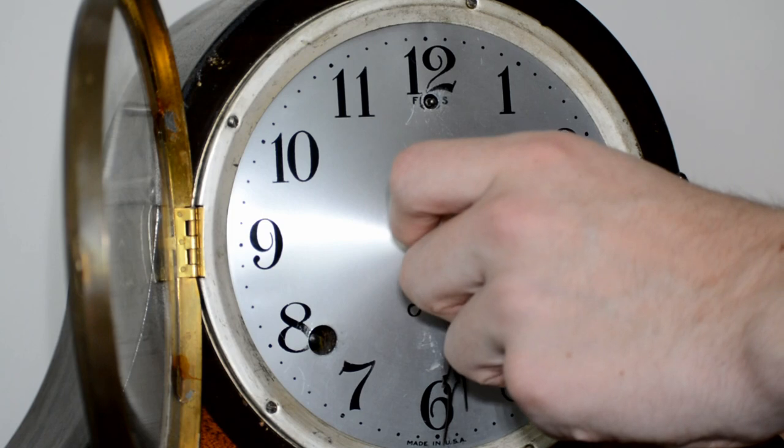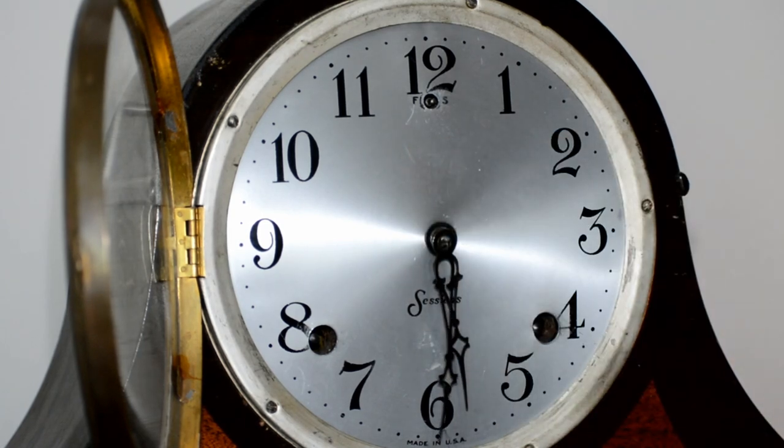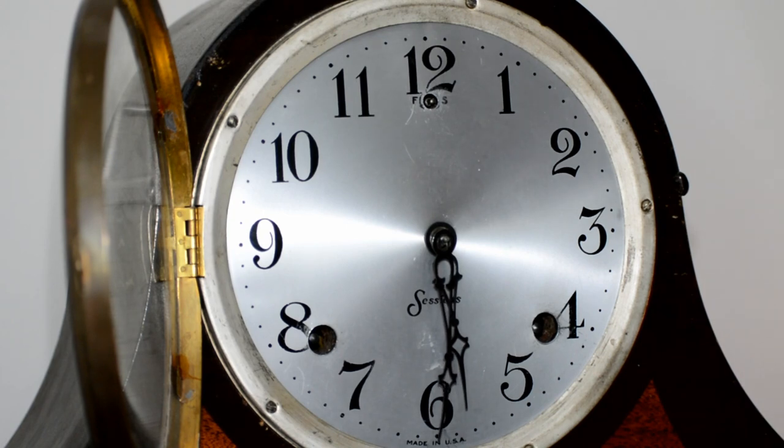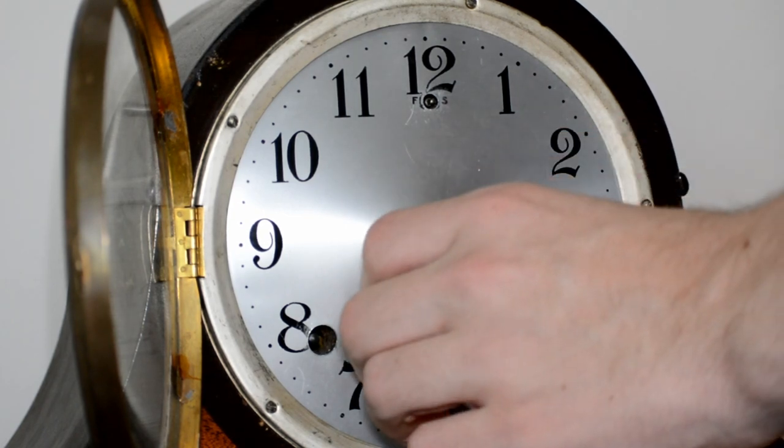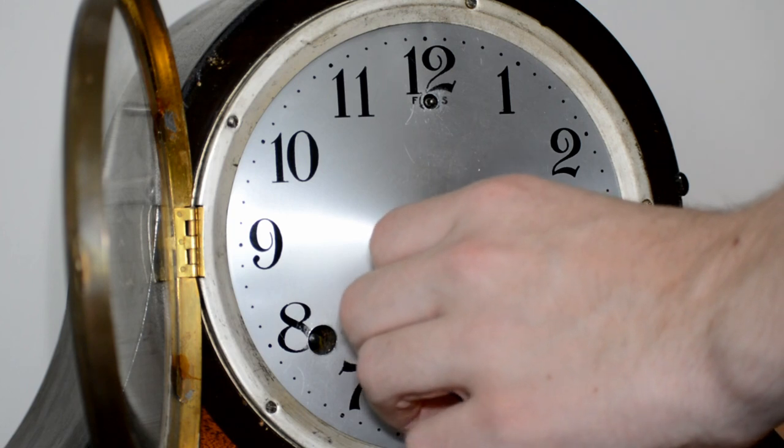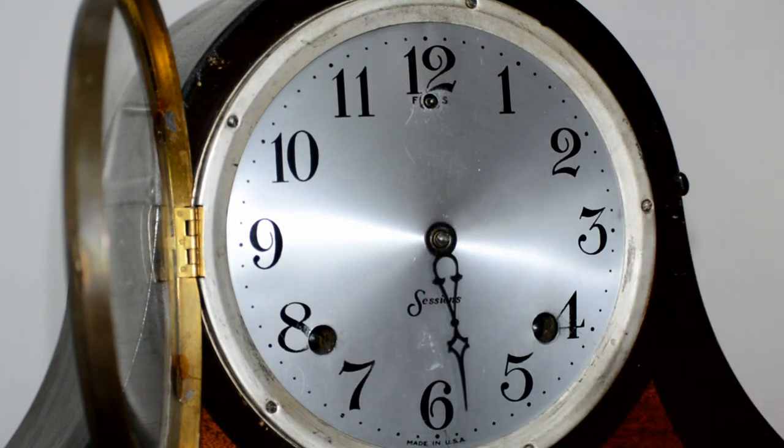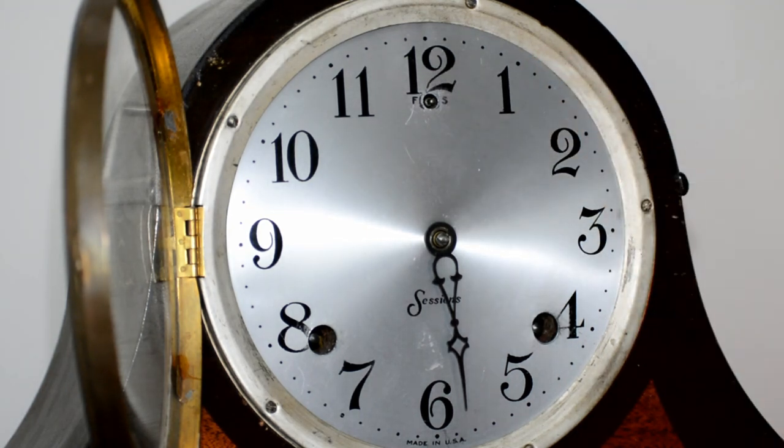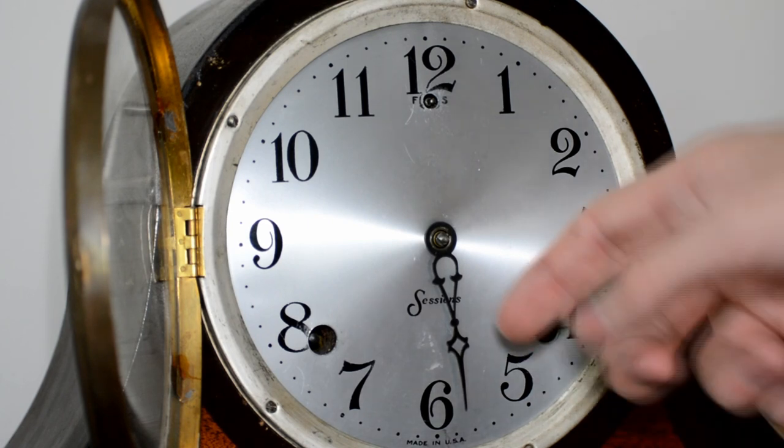The minute hand already fell down. Whenever you do this, you want to take a picture of what time the clock was on before you take the hands off, that way you can set it back correctly when you're done. Set this aside somewhere, don't lose it, don't break it.